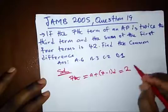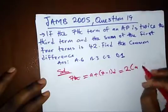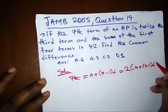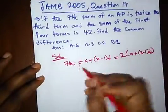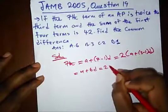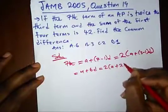It says it's twice the 3rd term. So A plus 3 minus 1 D. So what do we have here? We have A plus 6D is equal to 2 bracket A plus 2D.